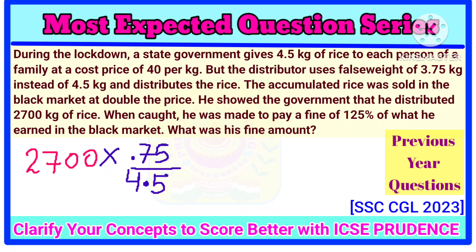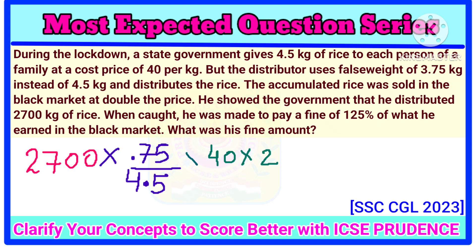This is how you find the profit in weight. Now, since he is selling this in the black market at double the price, the price was 40 rupees multiplied by 2, which is 80 rupees. This is his total earning or total selling price. On this, he has to pay a fine of 125%, that is 125 divided by 100, which equals 5 by 4.